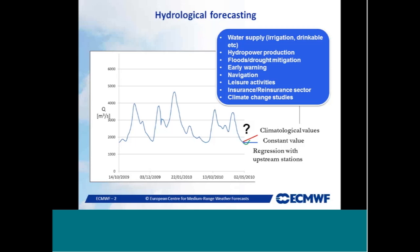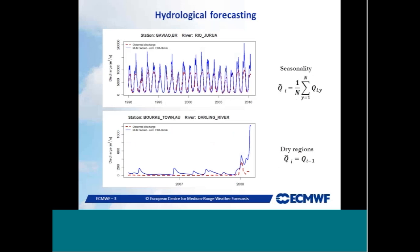Going for more sophisticated approaches, we can use regression with upstream stations, which works well if we are downstream, but the forecast lead time is proportional to the travel time of flow between two points. To extend lead time further, we need hydrological modelling based on observed or forecast meteorological inputs. Simple approaches like seasonal climatology or persistence can give good average skill but miss signals for upcoming extreme events.